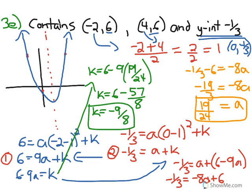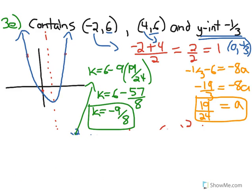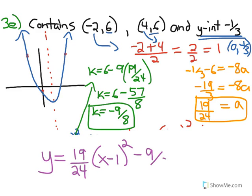I will do some erasing here again. Our final equation, we'll leave it in vertex form, equals y equals 19/24, that's our a. We know x minus 1 is our axis of symmetry, so it has to be (x - 1)² minus 9/8, which would be the y coordinate right here of the vertex.